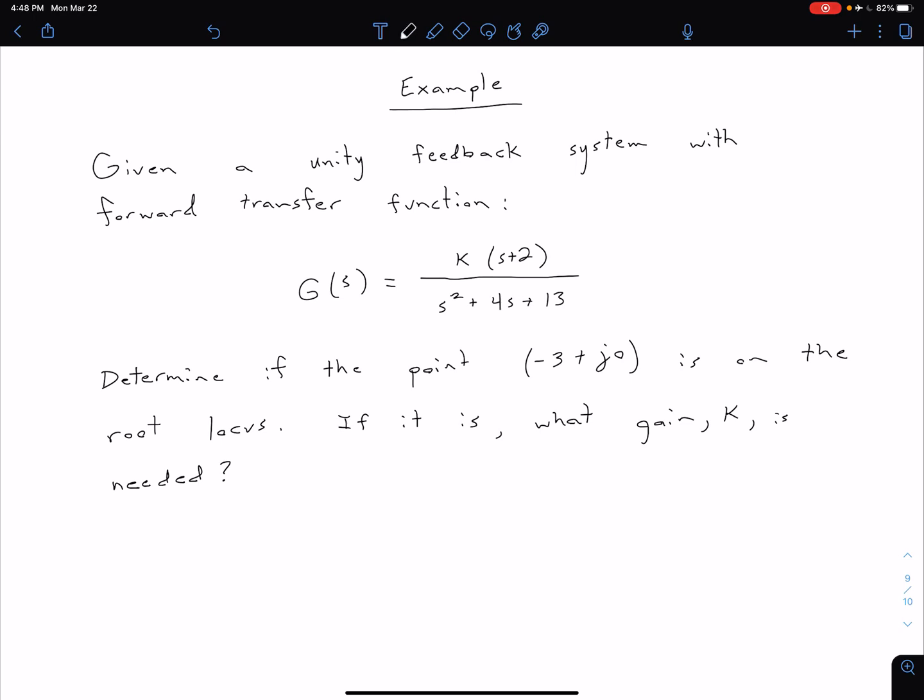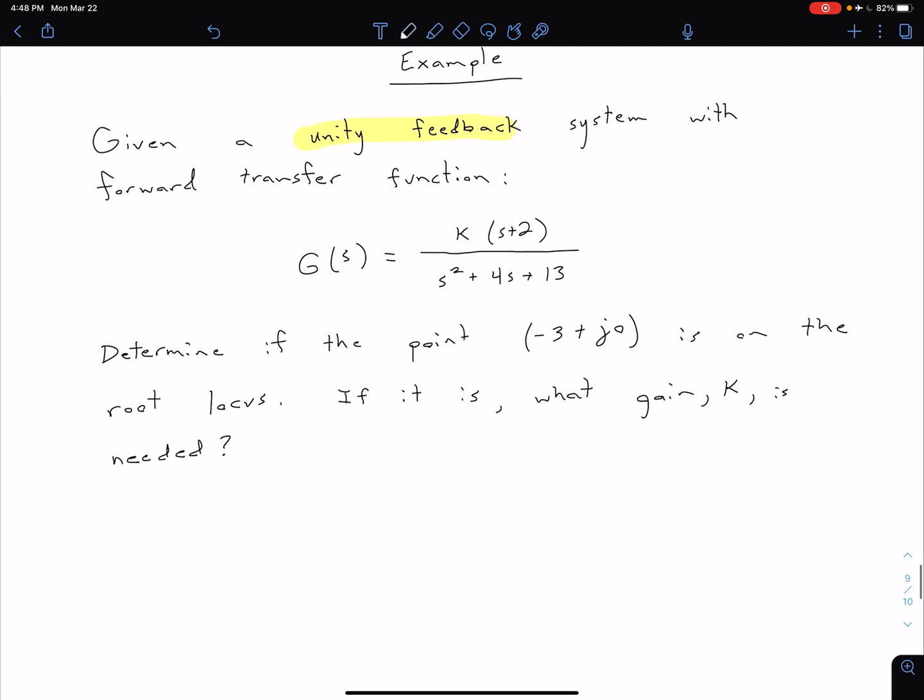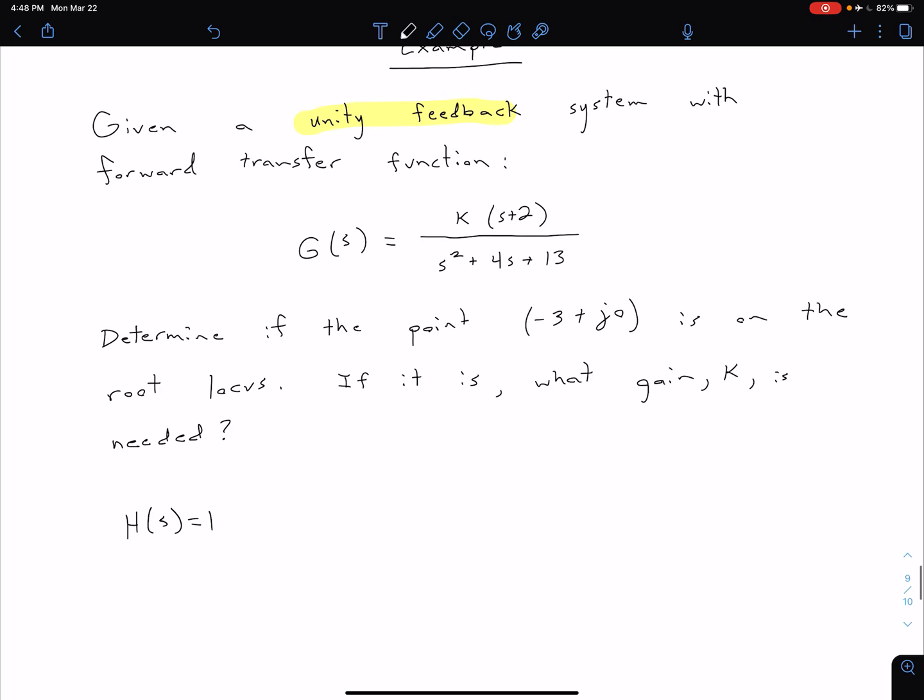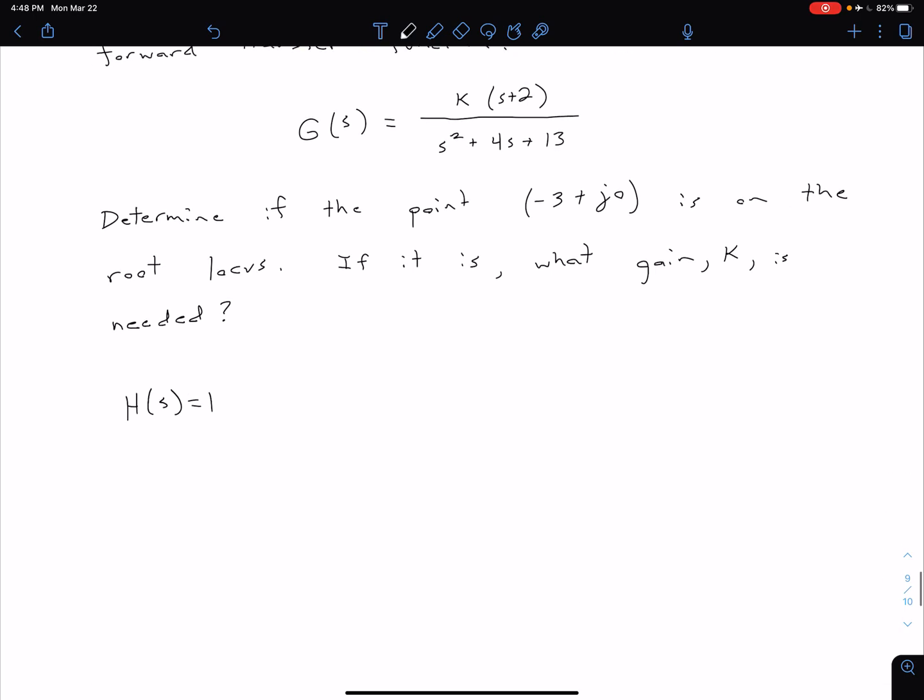We've assumed negative feedback because we're not told otherwise. We're told it's unity feedback, so H(s) = 1. There's a notation difference here because K is lumped in as part of G, which I'll address at the end of the example.